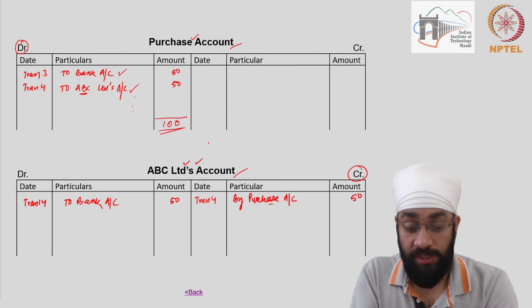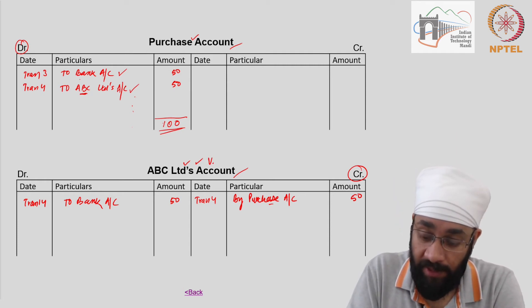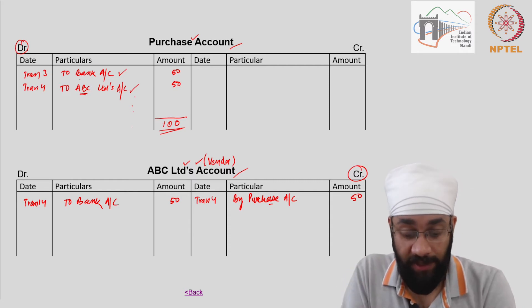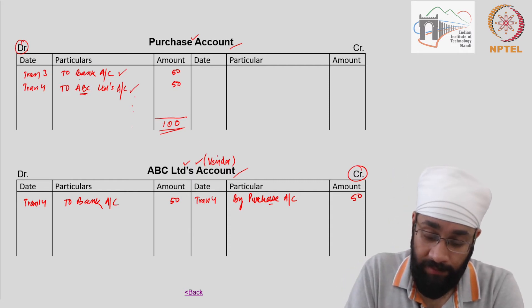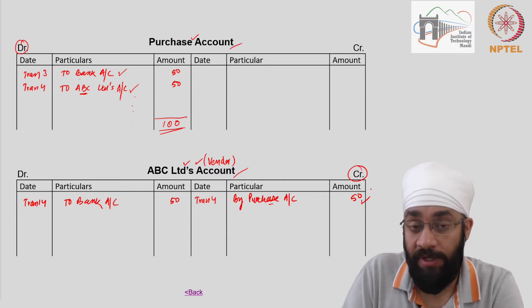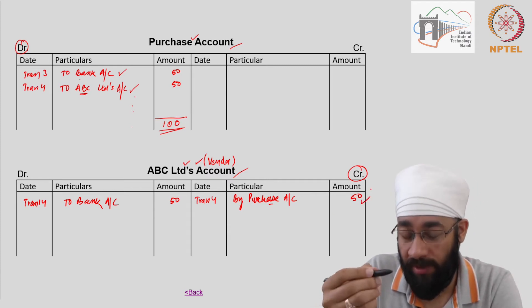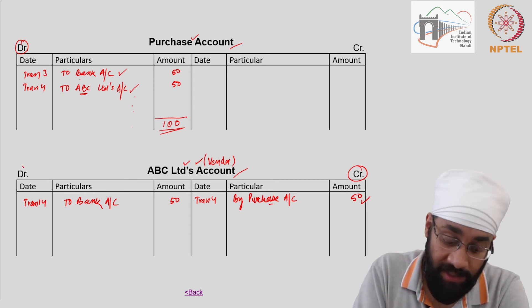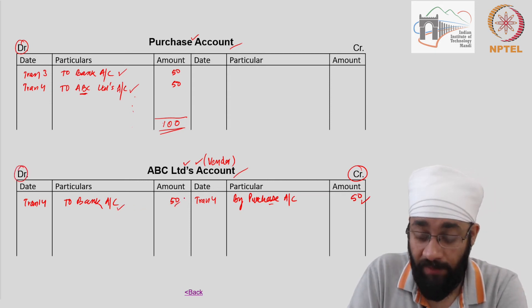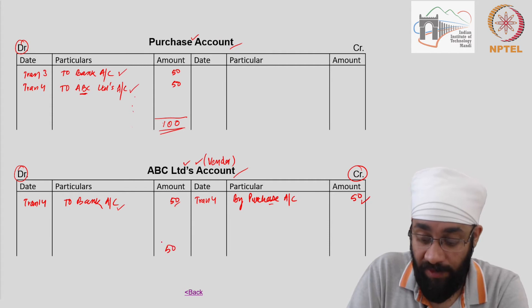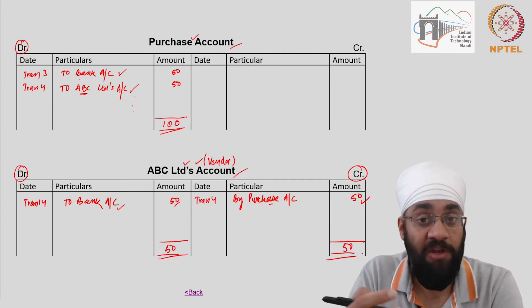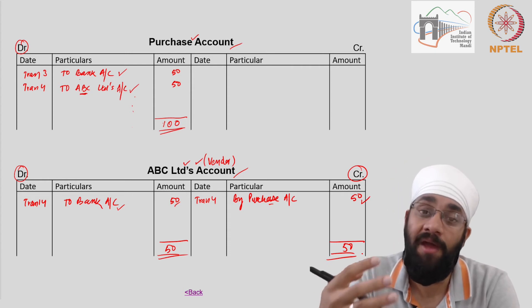ABC limited account - who is ABC? ABC is our vendor, just for recall purposes. He's the vendor. Now on the credit side you have written that you have purchased from him goods worth 50, and then on the debit side you are saying you paid to him 50. That means 50 were due to him, 50 have been paid - there is no balance, you don't have to pay him anymore.